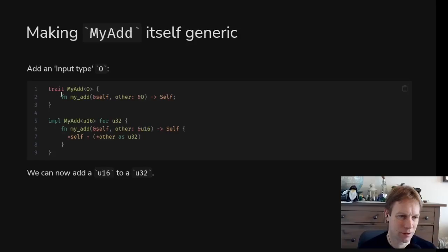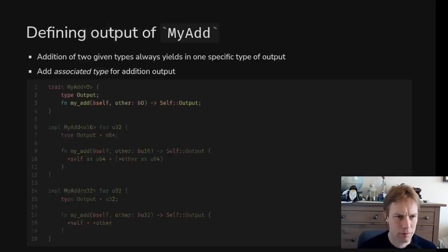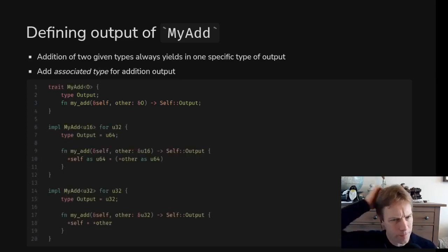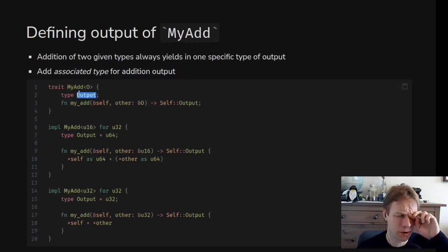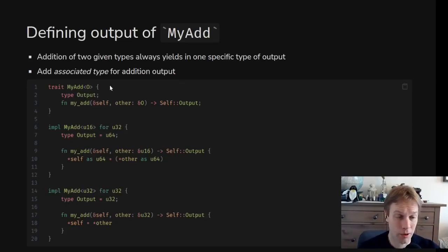Anytime you mention myAd you're going to need to say what the O type is — what the other thing is. That was about what type you're adding to. But you might also want to specify what the return type is. myAd still takes one type parameter O, but it also has this associated type called Output. We could have written 'other' instead of O, and 'Output' instead of a second generic parameter — they're slightly different, and we'll talk about exactly how in a moment.